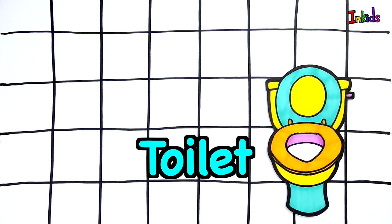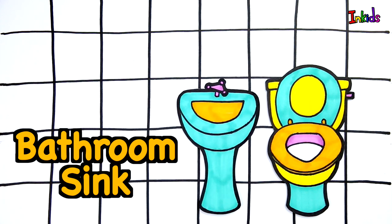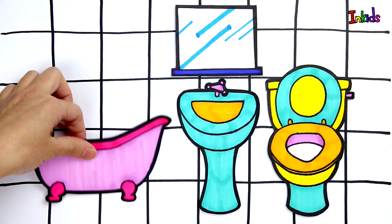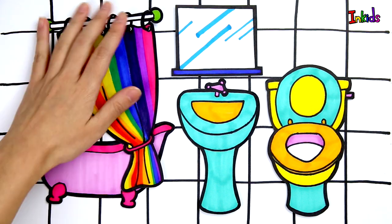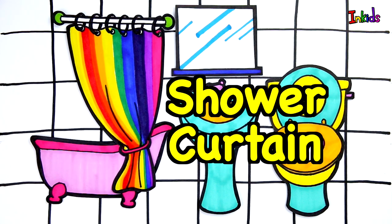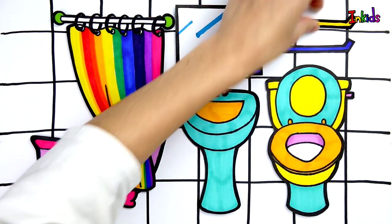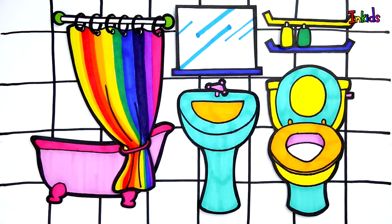Toilet. Bathroom sink. The itsy bitsy spider went up the water spout. Bathtub. Down came the rain and washed the spider out. Out came the sun and dried up all the rain. And the itsy bitsy spider went up the spout again.